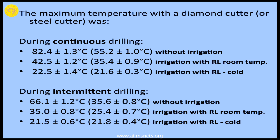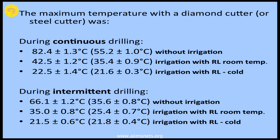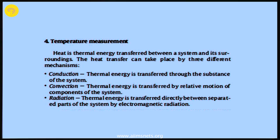When drilling continuously without water irrigation, it creates 82 degrees centigrade — enough to cause immediate necrosis of bone. When you irrigate with Ringer's lactate, it comes down to 42 degrees, and with cold water it comes to 22 degrees. With intermittent drilling — giving some rest time — without irrigation the temperature is 66 degrees, with saline it drops to 35, and with cold saline it comes to 21 degrees.